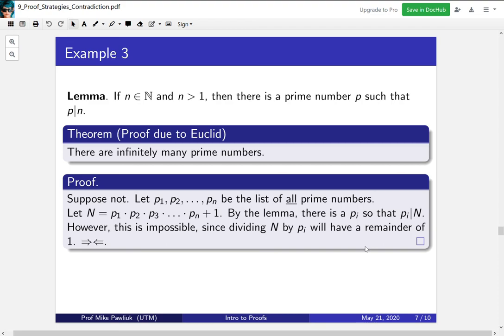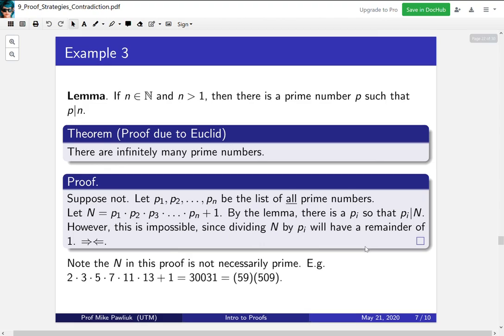This proof is quite dense. It'll take some time to think about it. You can try writing through some examples. But it is quite a beautiful proof. It's very compact. You should think about why it's a beautiful proof. An additional note: the N that's produced in this proof is not necessarily prime.